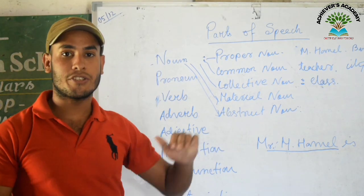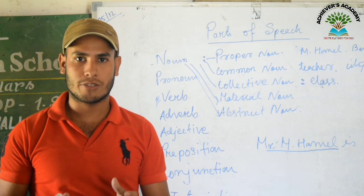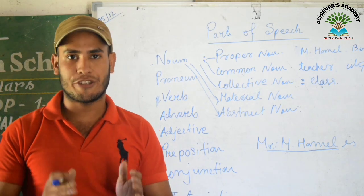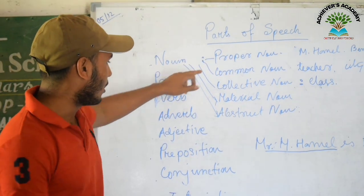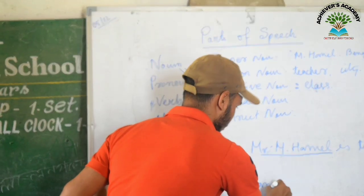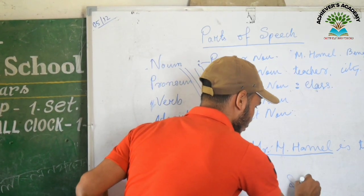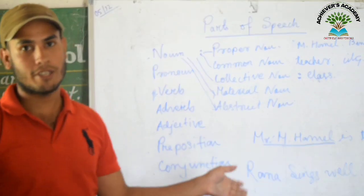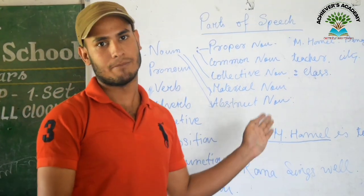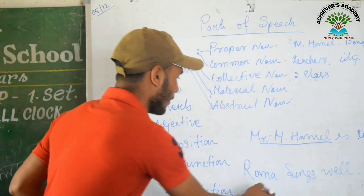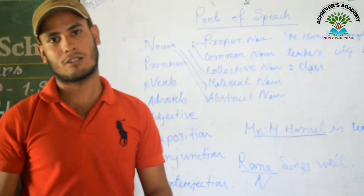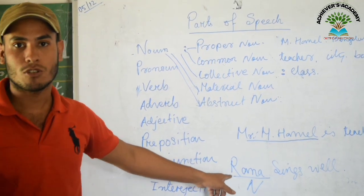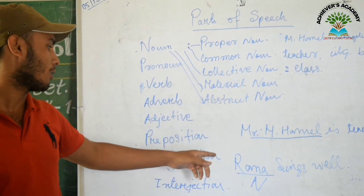A noun is just a name given to a place, to a person, to an animal or thing. For example, 'Rama sings well.' Here you can see Rama is a name of a person, so Rama is a noun here.